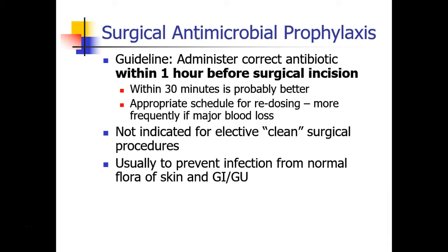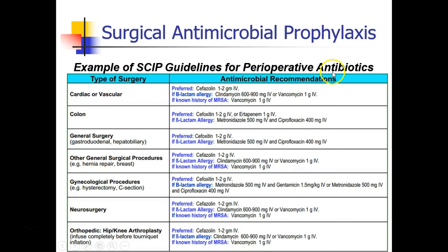Nevertheless, the guideline says to give it within the hour before surgical incision. SCIP guidelines also recommend appropriate redosing based on the half-life of the antibiotic, and redosing may need to occur more frequently if there's major blood loss and subsequent loss of antibiotic from the serum. Certain procedures which are clean may not require antibiotics. The reason we're giving antibiotics is to prevent infection from normal flora of skin and the GI or GU tract. Here's an example of SCIP guidelines showing different types of surgery, the preferred antibiotic, and the alternative if the patient has an allergy to beta-lactams or a known history of methicillin-resistant Staph aureus.